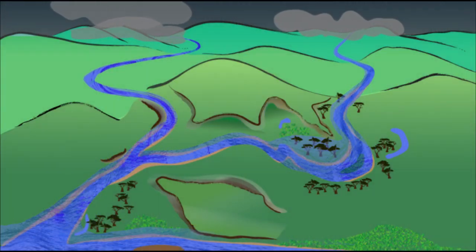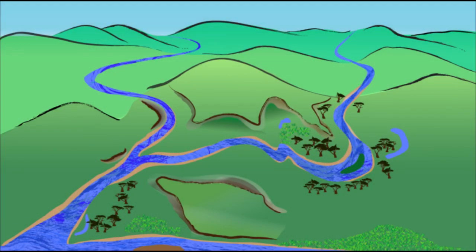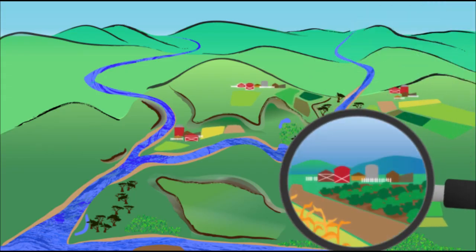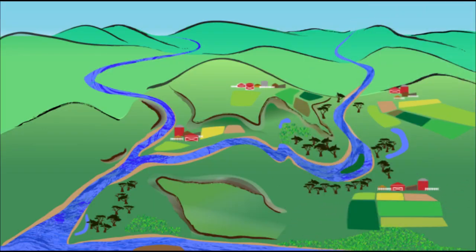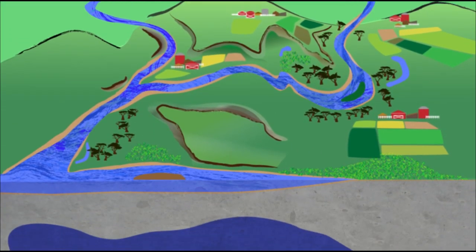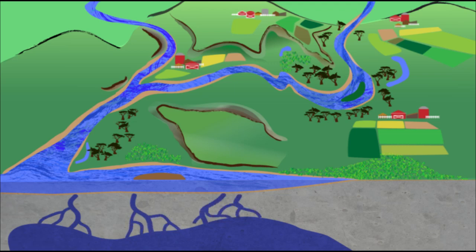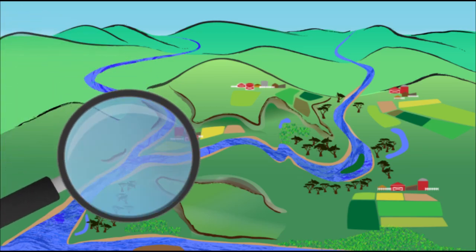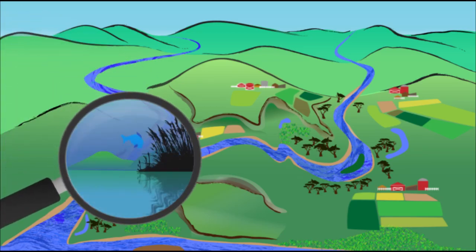Floodplains serve as natural filters that clean our water by removing nutrients and sediments. Floodplains can support highly productive farms because centuries of floods have left behind nutrient-rich soil. Floodplains also recharge underground aquifers used for drinking water and irrigation. And these areas are among the richest places for wildlife like fish and waterfowl that support important economic activities.